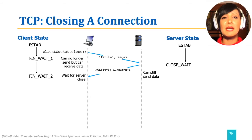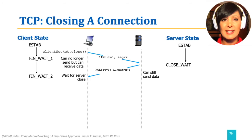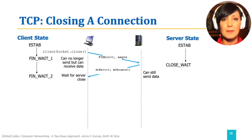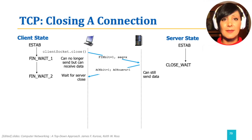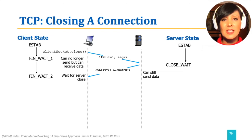The server continues sending data while keeping the same ACK sequence number from the client and increasing its own sequence number with data, without setting a FIN bit for its side. The client, upon receipt of the first of these segments, enters the FIN_WAIT_2 state.